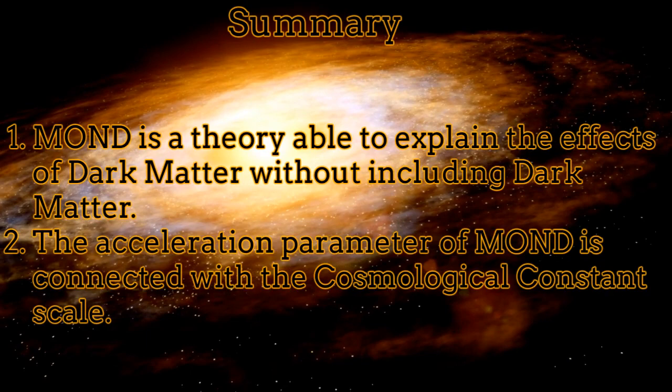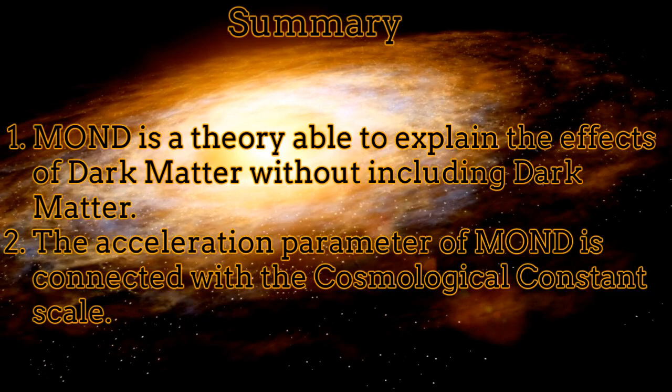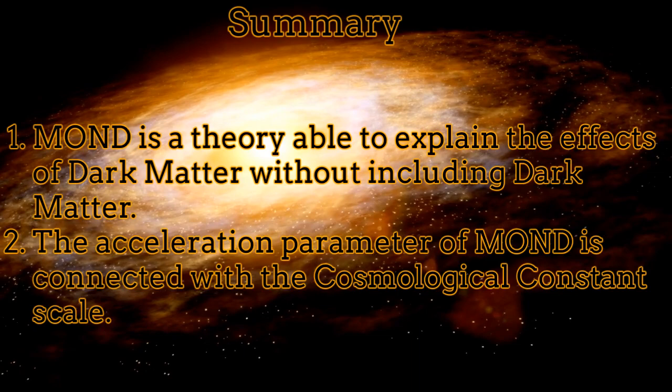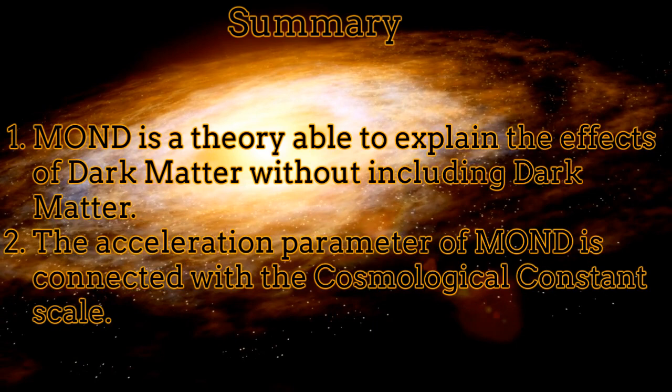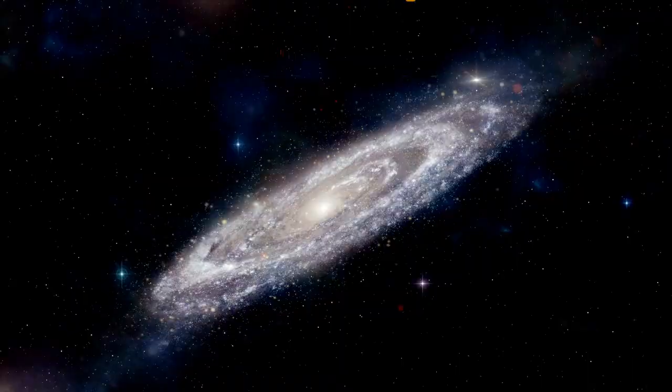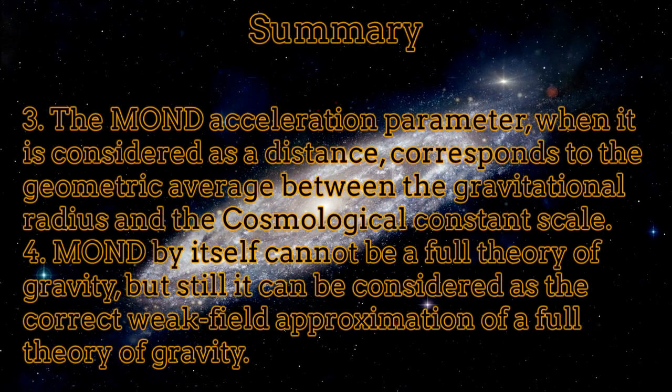In summary, MOND is a theory able to predict the behavior of galaxies. It explains the effects of dark matter without including dark matter. The acceleration parameter of MOND is connected with the cosmological constant scale. The MOND acceleration parameter, when considered as a distance, corresponds to the geometric average between the gravitational radius and the cosmological constant scale.